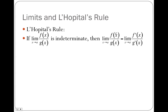I believe your Calc AB teacher last year taught you a little bit about L'Hôpital's rule. Today we're going to do a lot more with it. What you learned last year was that if the limit as x approaches a of some expression written as a ratio f(x)/g(x) is indeterminate, then the limit equals the limit as x approaches a of f′(x)/g′(x). In other words, if substitution gives something indeterminate, that limit equals the same limit but taking the derivative of the numerator and denominator. You cannot always do this — only if the ratio is indeterminate.